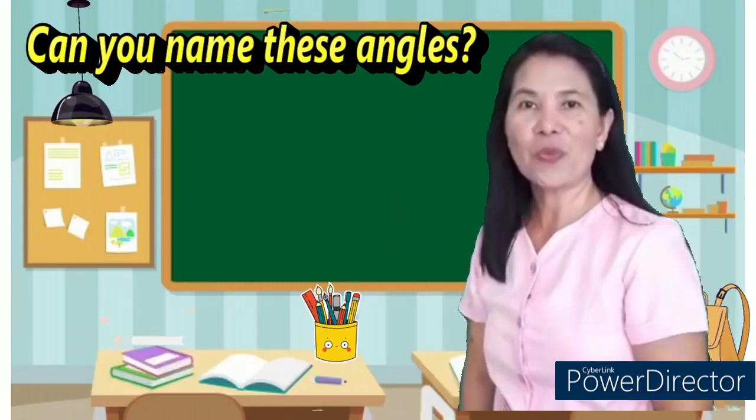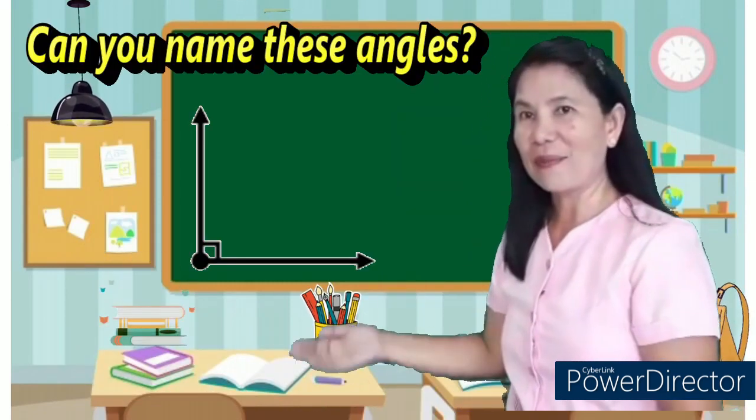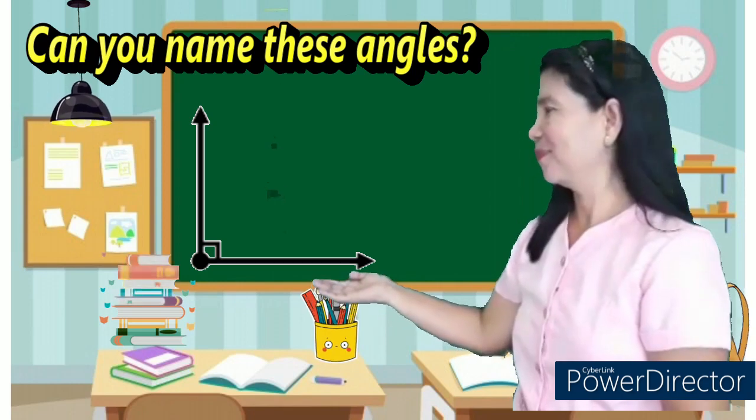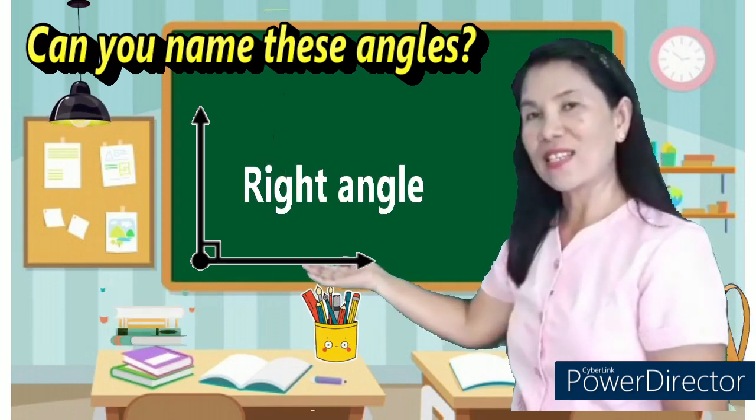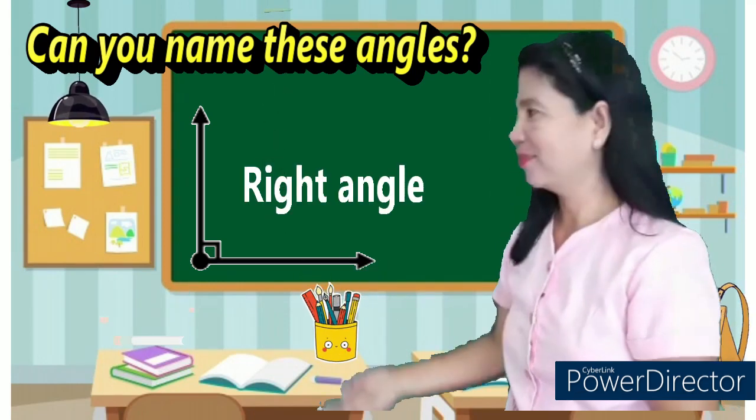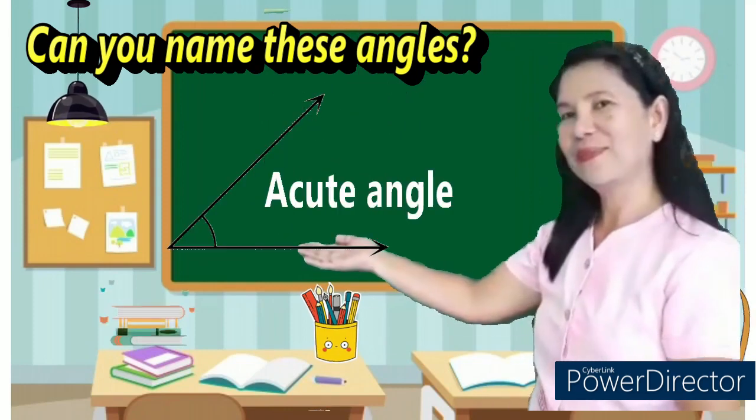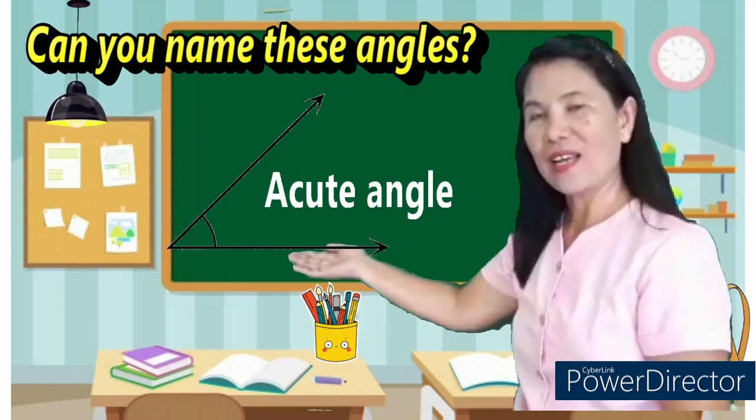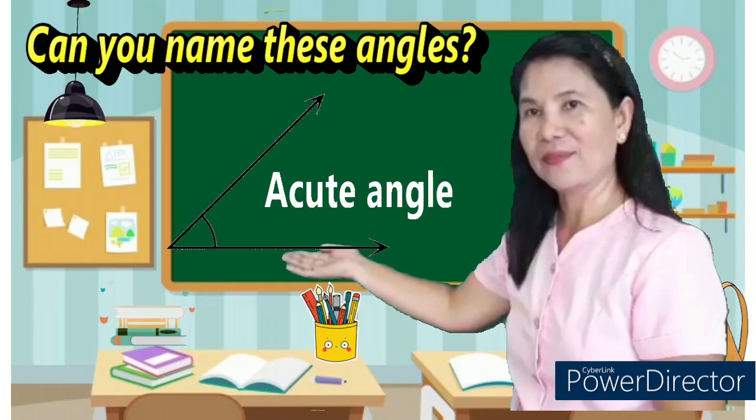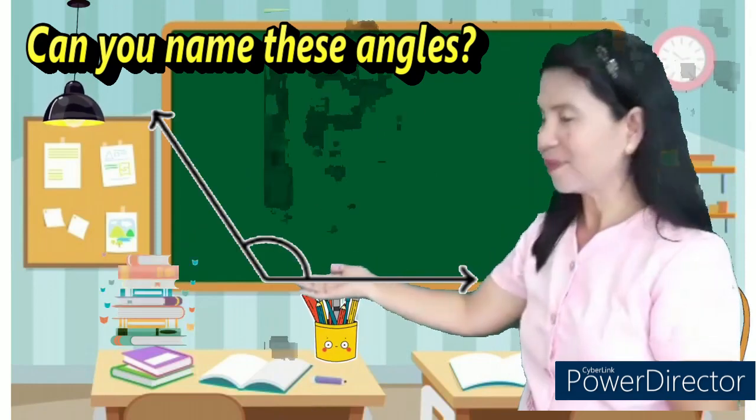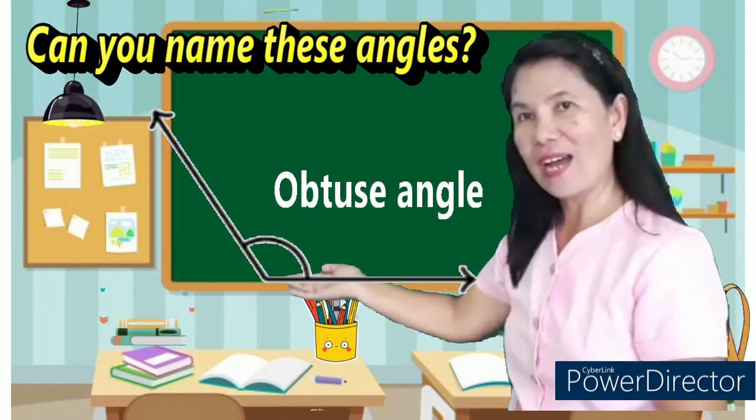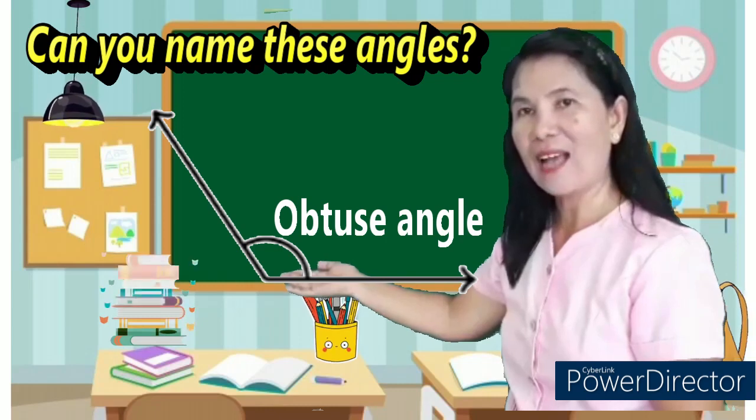Before that, let's go back to your previous lesson. Can you name this angle? Correct! This is a right angle. How about this one? Very good! This is an acute angle. And this one? Right! This is an obtuse angle.